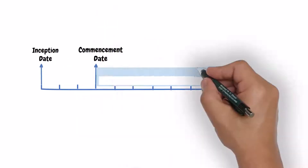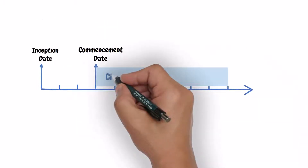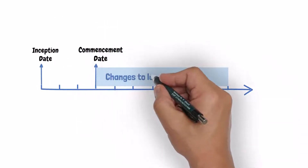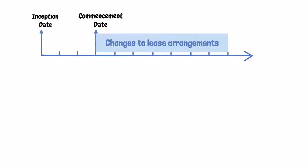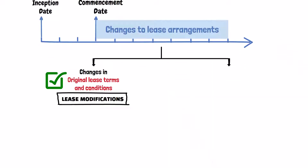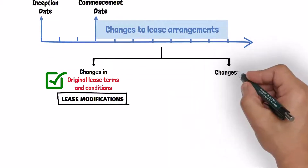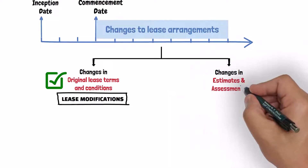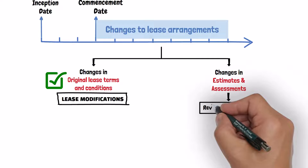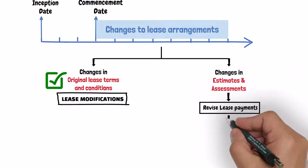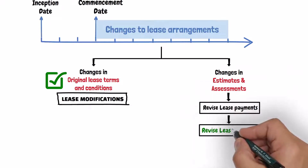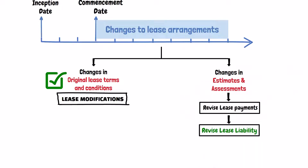As we said before, the second category of the changes that occur to the lease agreements after the commencement date are changes in the estimates on which the calculation of the lease payments is based, and therefore require a reassessment of the lease liability. So they are only changes in estimates, not changes in the original contract terms.